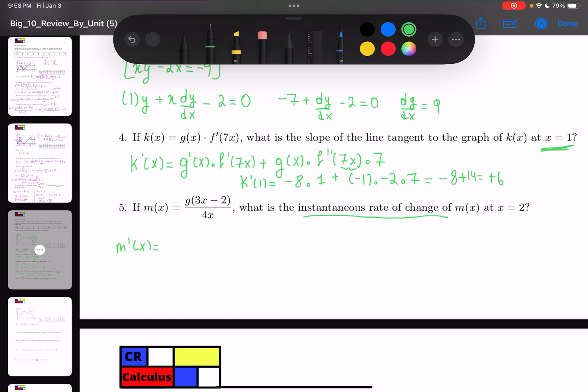You're going to use chain rule for the numerator. The numerator is g'(3x-2) times 3, that's u'v, which is 4x, minus u, which is g(3x-2), times v', which is 4, over 16x^2.